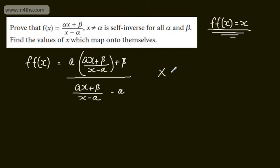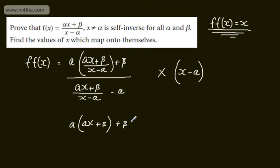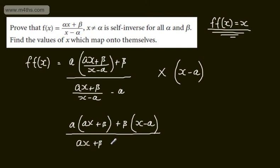At this stage, I'm going to multiply through by the linear factor of x minus alpha. In the numerator, I'm going to have alpha multiplied by alpha x plus beta, then plus beta multiplied by x minus alpha. In the denominator, I'm going to have alpha x plus beta, then minus alpha multiplied by x minus alpha.